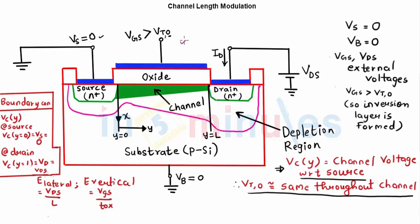Where my source and body both are grounded. This means there will be no substrate bias effect or no body effect because both of them are connected to the same terminal. My VGS and VDS are external voltages. My VGS is greater than VT0 - it's not an O, remember it's VT zero. Zero means zero substrate bias effect.